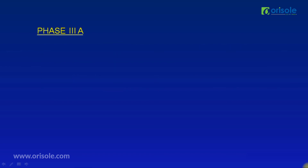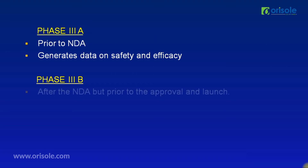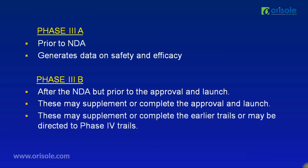The types of phase 3 studies are Phase 3A, done prior to the New Drug Application (NDA) to generate sufficient safety and efficacy data, and Phase 3B, conducted after NDA submission but prior to approval and launch. Phase 3B may supplement or complete the approval process, building on earlier trials, and may lead into phase 4 trials. Phase 3 studies assess the overall and relative therapeutic value of a new drug's efficacy, safety, and special properties, and determine the optimal dosage schedule for general use.